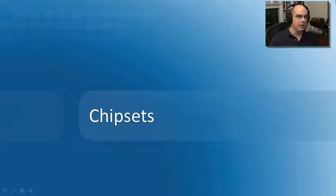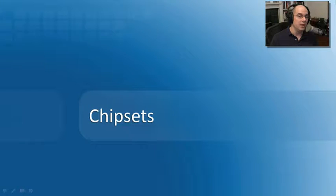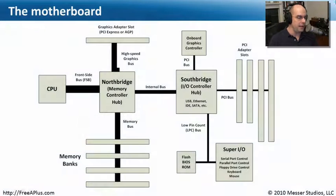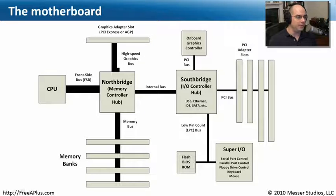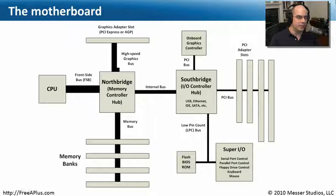Let's start our conversation with chipsets. Just like the name implies, a chipset is a set of chips put together — sometimes it's an individual chip with a lot of different components inside. What I have here is a picture of that motherboard, but I've taken all the different components and separated them out on screen with names so we can understand exactly how the motherboard works.